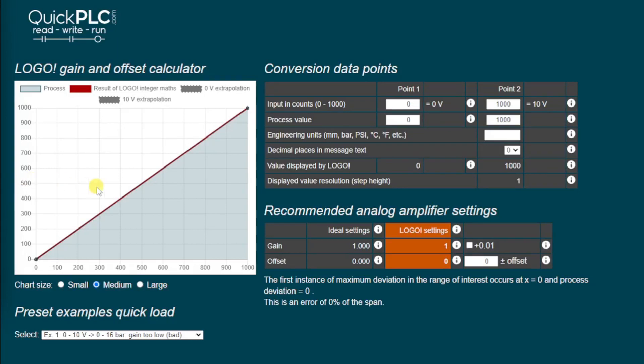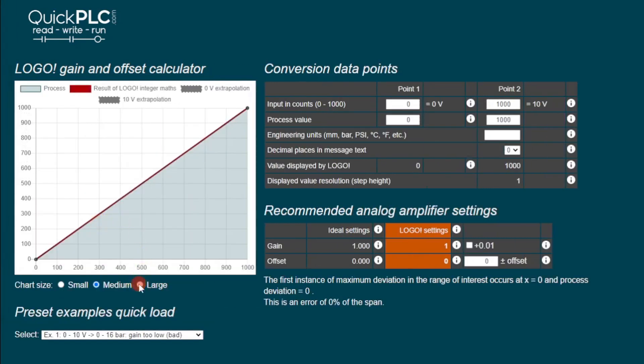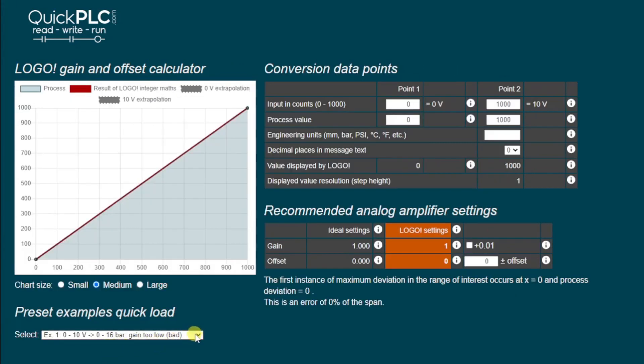The main features are a chart showing the relationship between the input on the x-axis and the output on the y-axis. We can go small, medium, or large to examine the detail or to suit your screen resolution. There are some preset examples which I'll be adding to, which give you load up some preset values to display on the graph. There's the data input area over here, and there's the results area here showing the ideal settings for the gain and the offset, and what you can practically put into the logo, given the restrictions on the number values.